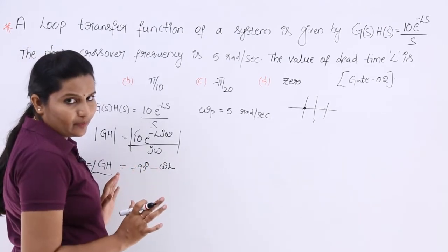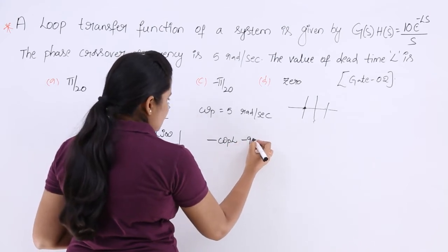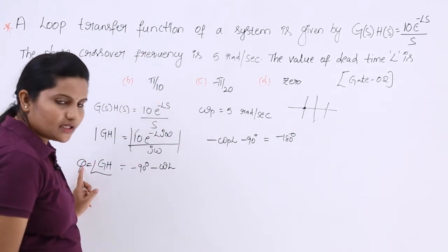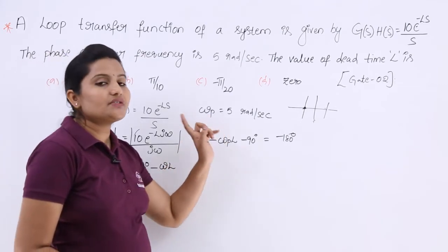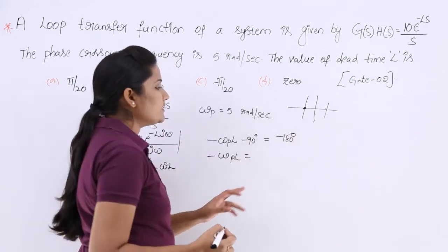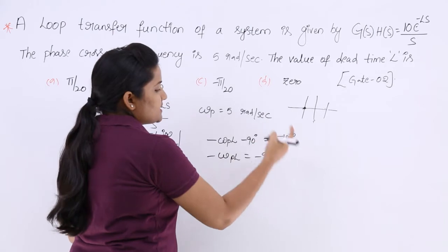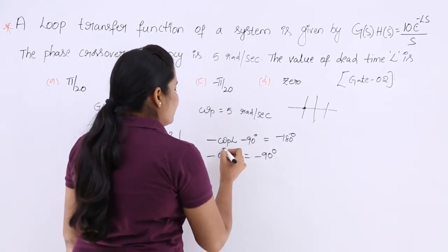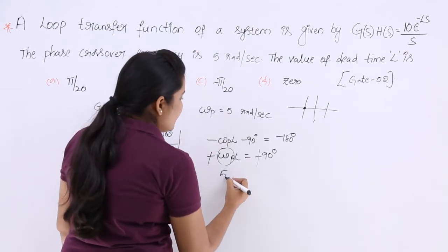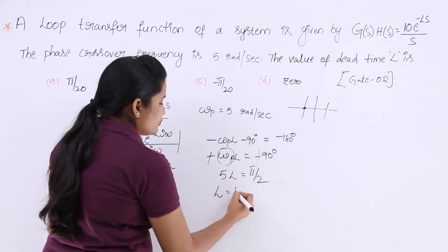Here I have the phase expression. If I want to write omega as omega-p, then we need phase equal to minus 180 degrees. When phase is equivalent to minus 180 degrees, then only can we say that frequency is the phase crossover frequency. So minus 90 minus omega-p times L equals minus 180. Cancelling minus signs, omega-p is given as 5, so 5L equals 90 degrees, which I write as pi over 2. Therefore L equals pi over 10.